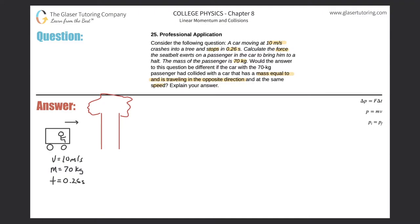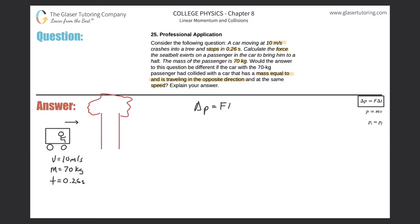Let's calculate the force first. We have a car traveling to the right with a velocity of 10 meters per second. The car's mass isn't given, but the person's mass is 70 kilograms, and since the car moves at 10 m/s, the person does too. The time to come to a halt is 0.26 seconds. Since momentum is changing and we're given time, we use: change in momentum equals force multiplied by change in time. Solving for force: F = Δp / Δt.